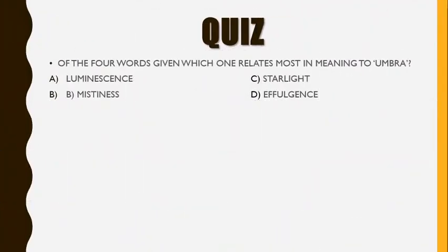Have you understood the word? Let us take a short quiz. Of the four words given, which one relates most in meaning to umbra? Luminescence, mistiness, starlight, or effulgence. Post your answers in the comment section.